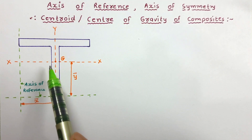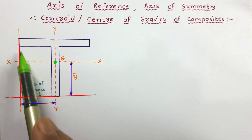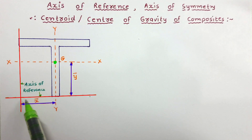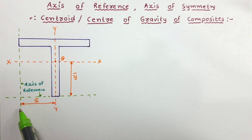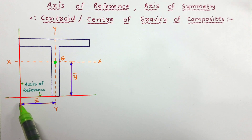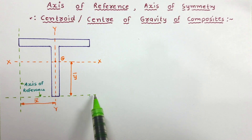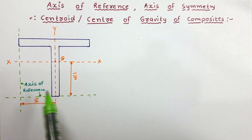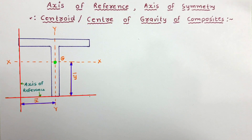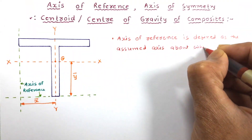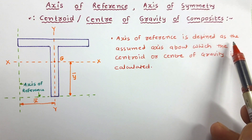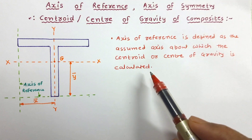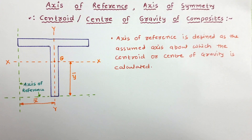Centroid or center of gravity of any body is always calculated with reference to some assumed axis. Such assumed axes are selected in such a way that the body remains in the first quadrant. The axis parallel to Y is always selected passing through the leftmost portion of the body, and the assumed X-axis is always selected as the lowermost part of the body. Such assumed axes are called axis of reference. Axis of reference is defined as the assumed axis about which the centroid or center of gravity of the body is calculated.